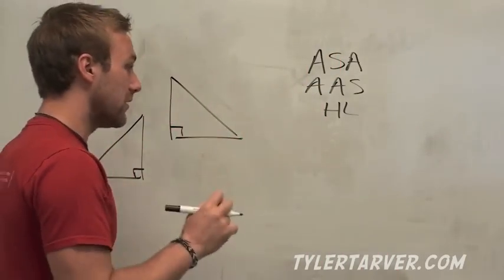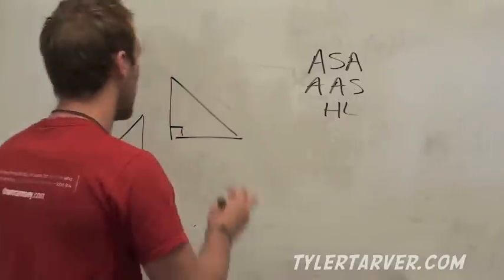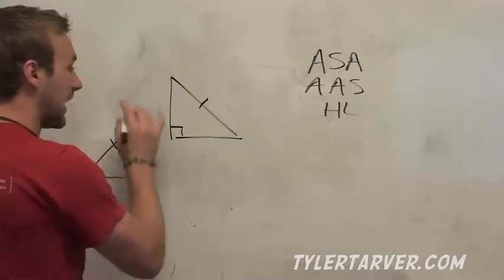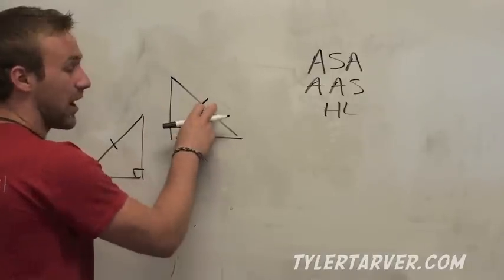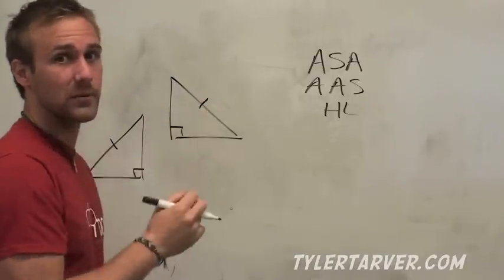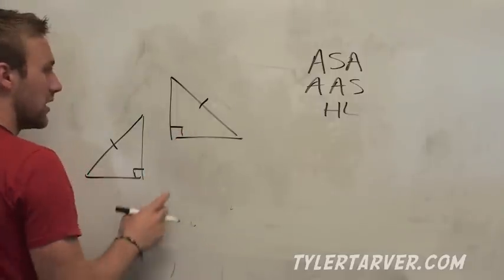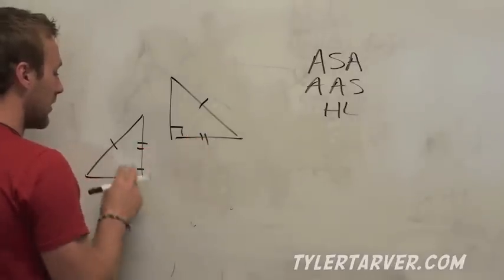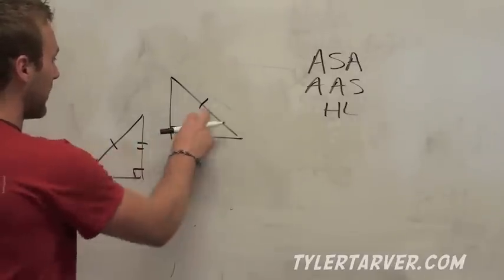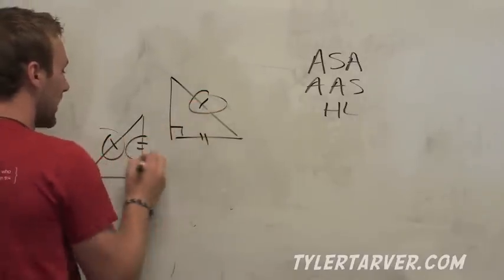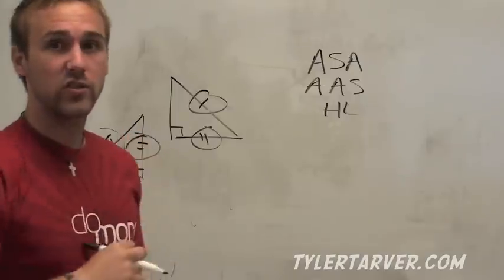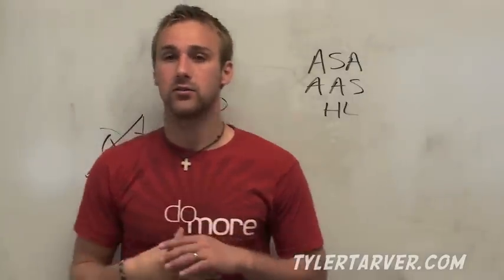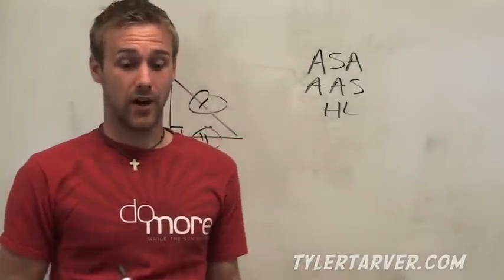HL does work, though. It means you have a hypotenuse and one of the legs. The hypotenuse is always opposite the right angle. If you have a hypotenuse that's congruent and a leg that's congruent, you can prove those two triangles are exactly the same by hypotenuse-leg.